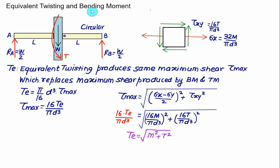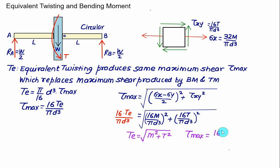Similarly, we can develop the concept of equivalent bending moment. If the shaft is subjected to one bending moment and one twisting moment, you can calculate the equivalent twisting moment Te and then directly calculate tau_max as 16·Te/(π·D³) in one step, avoiding the time-consuming principal stress calculation. In a similar fashion we define the equivalent bending moment Me.